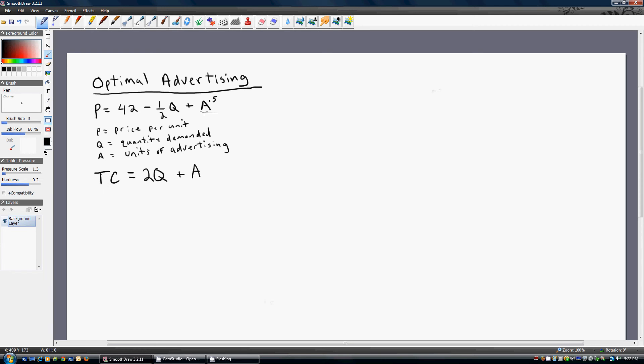Plus the square root of A, where A is units of advertising. This firm also has a total cost of production given by 2 times Q plus A. Q is just a quantity of output produced by the firm, and A represents units of advertising.